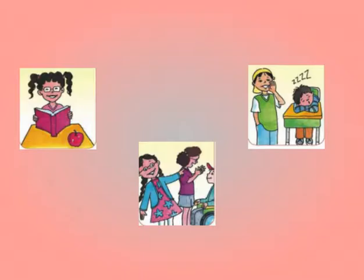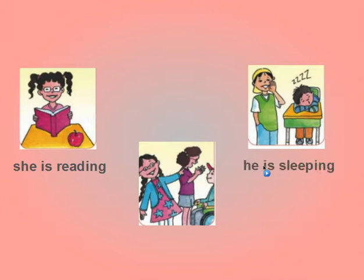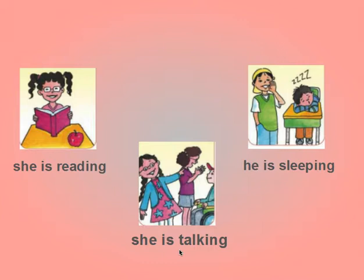Let's practice. What's she doing? She is reading. What's he doing? He is sleeping. What's she doing? She is talking. So: number one, she is reading; number two, he is sleeping; number three, she is talking.